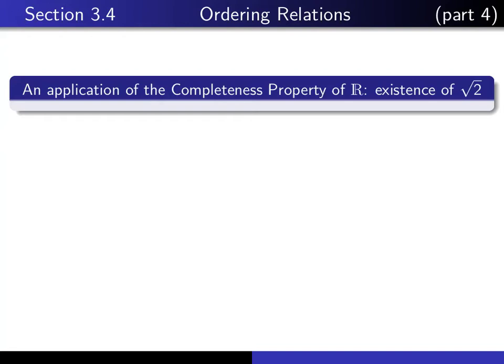This is part 4 in our series of lectures on section 3.4. In this lecture, I'm going to give an application of the completeness property of the set of real numbers — namely, I'm going to prove that the number square root of 2 exists as a real number.